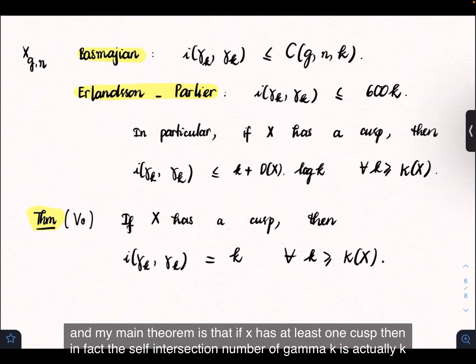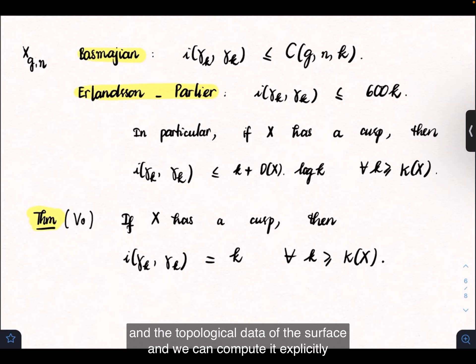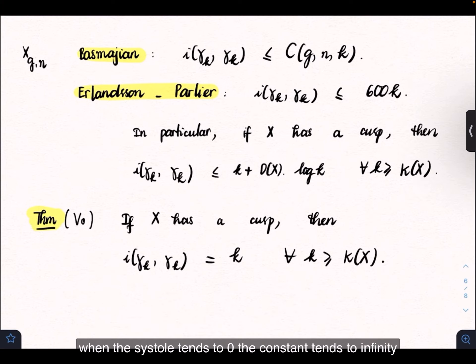My main theorem is that if X has at least one cusp, then the self-intersection number of gamma_K is exactly K for all K greater than or equal to K_X, where K_X is a constant depending on the systole of the surface and the topological data. We can compute it explicitly. When the systole tends to zero, the constant tends to infinity.